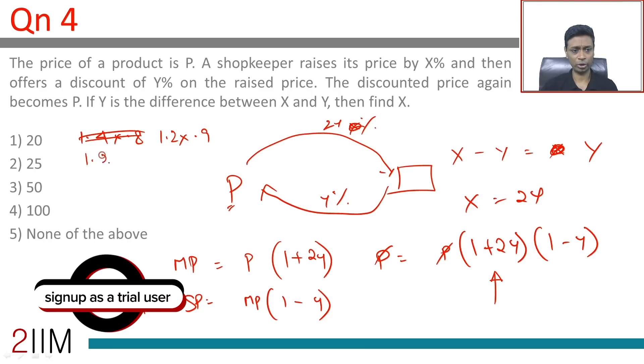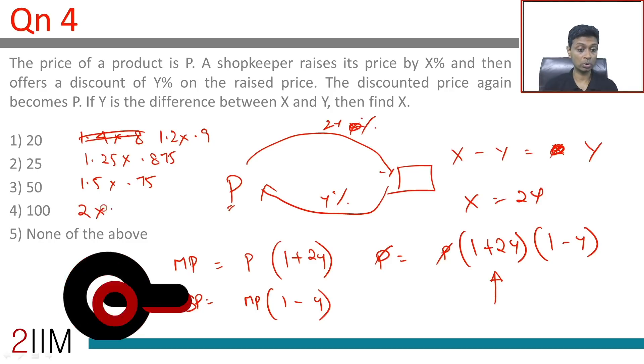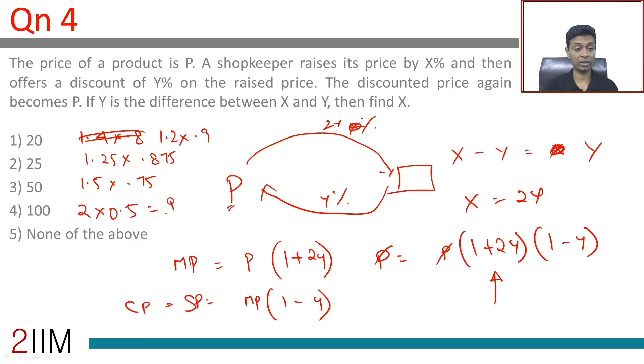This is 1.25 into 0.875, 5 by 4 into 7 by 8 doesn't work. 1.5 into 0.75, that's not 1. 2 into 0.5, that is 1.